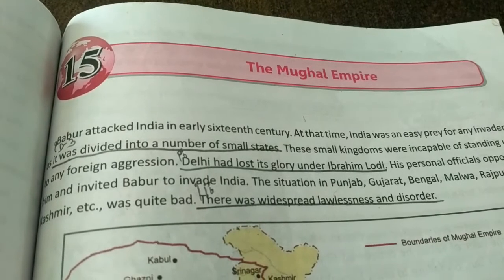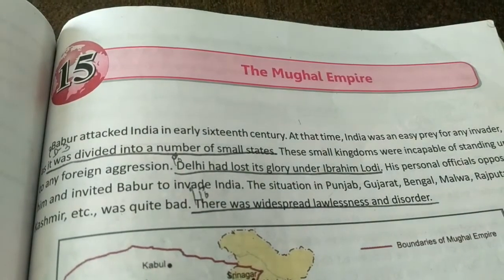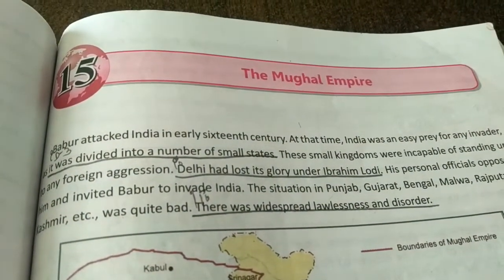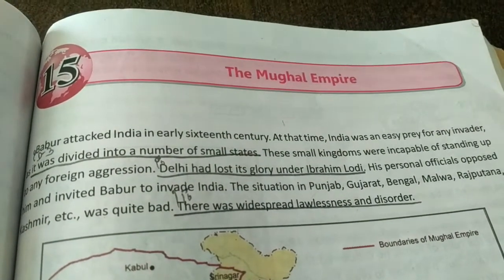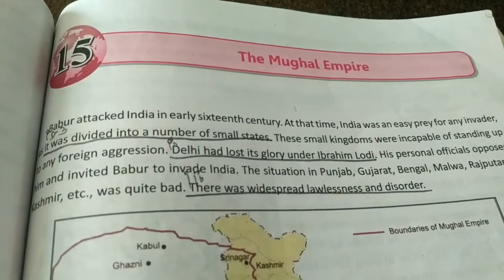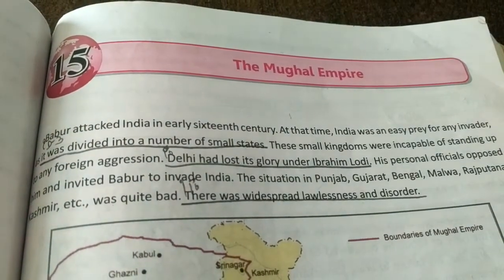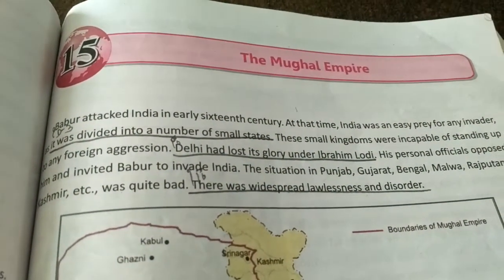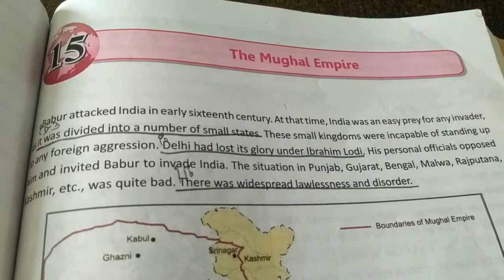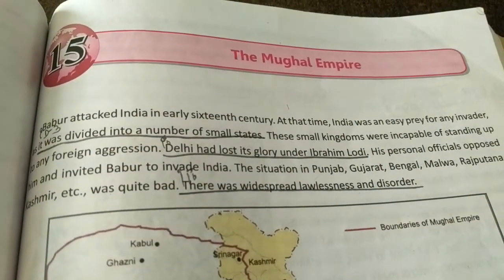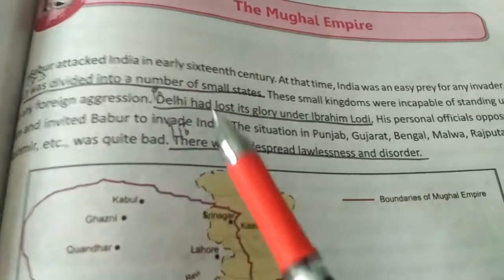Babur attacked India in the early 16th century. At that time, India was an easy prey for an invader, as it was divided into a number of small states, as we discussed in the previous chapter on Regional Past. Many small kingdoms arose due to the incapability of different rulers, and these small kingdoms were incapable of standing up to any foreign aggression.